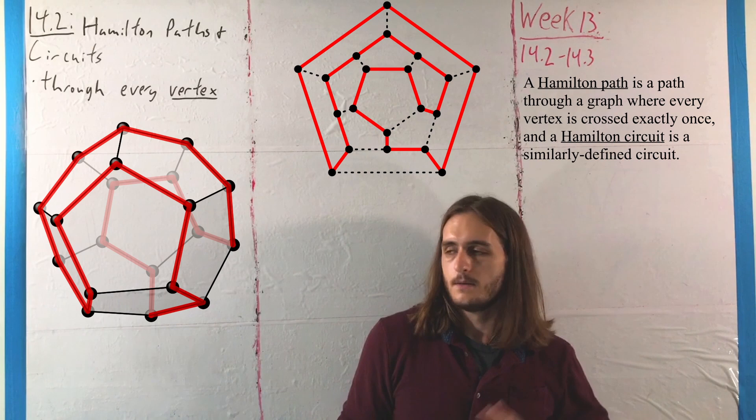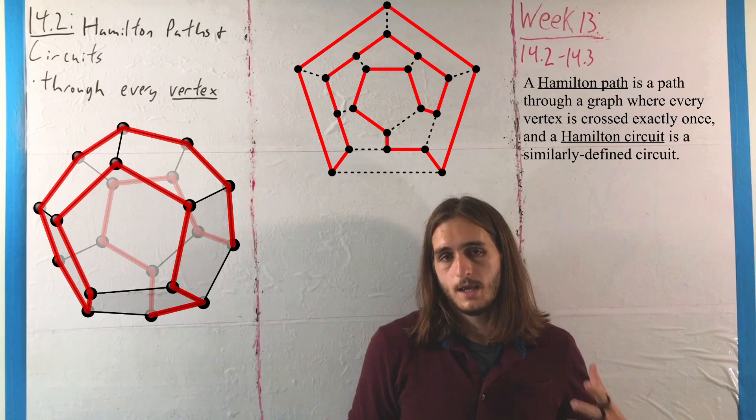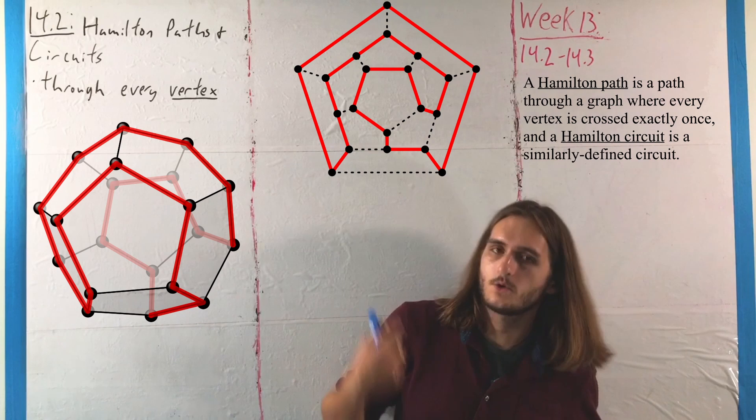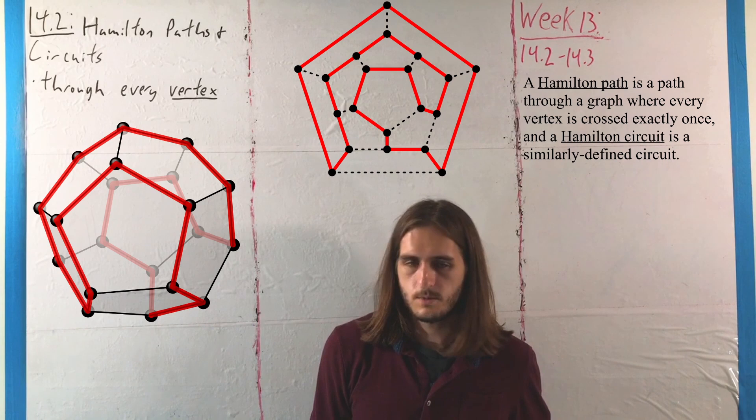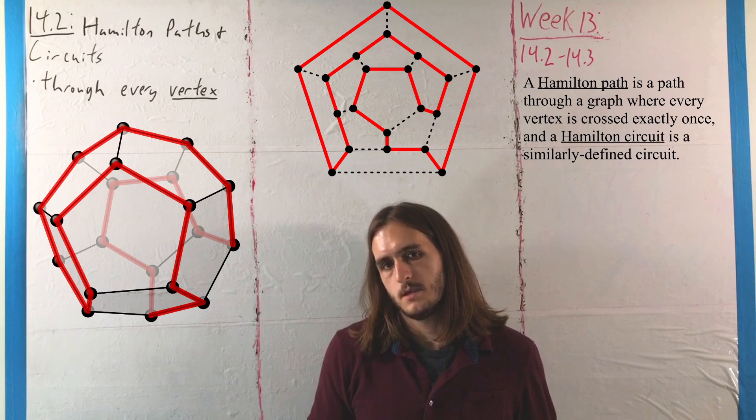But here we are trying to, instead of hitting every edge, hit every vertex, and we're getting a Hamilton Path or a Hamilton Circuit. As you can see there with the Eicosian example, we don't necessarily have to hit all of the edges, and we often won't get all of the edges to get every vertex. If you get both, it's something of a rare and special thing that really only is particularly reliable in the context of some of the very simplest graphs, things like paths and circuit graphs in particular.